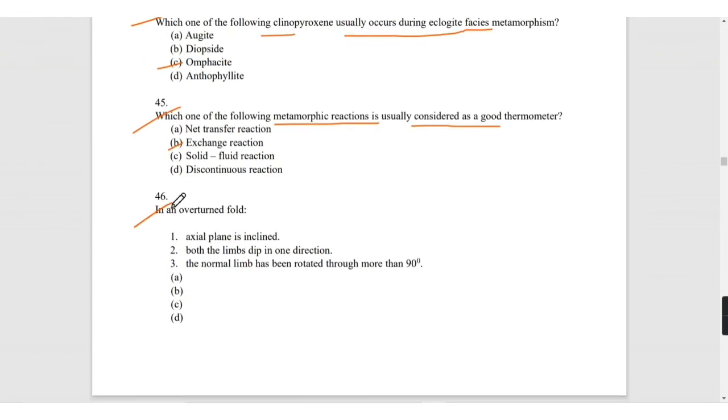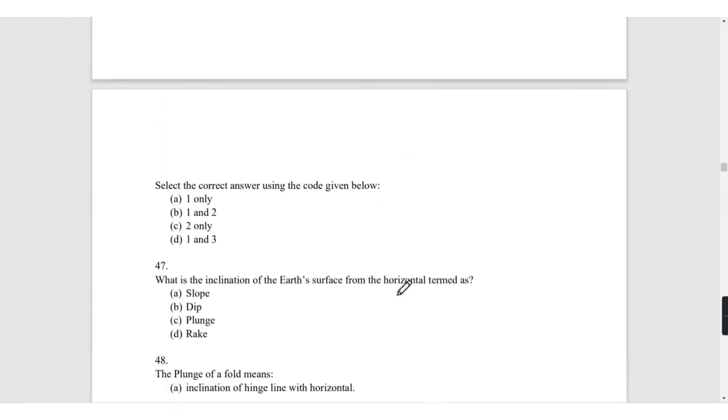In an overturned fold, axial plane is inclined, yes. Both limbs dip in one direction, yes. The normal limb has been rotated through more than 90 degrees, no. So one and two are correct.